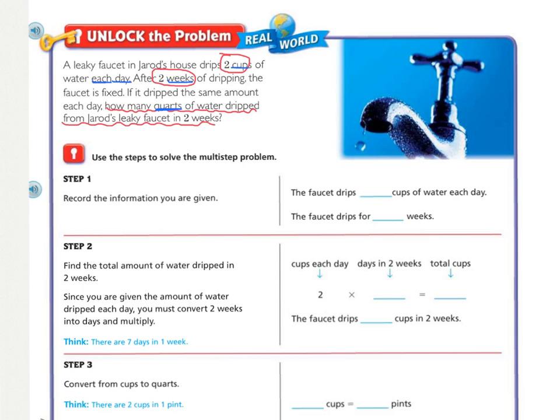So now, step one in our multi-step problem is to record the information that we've been given, and that's the numbers that we've circled. So the faucet drips how many cups of water each day? It drips two cups of water each day. The next piece we were given is the faucet drips for how many weeks? Well, we know it drips for two weeks.